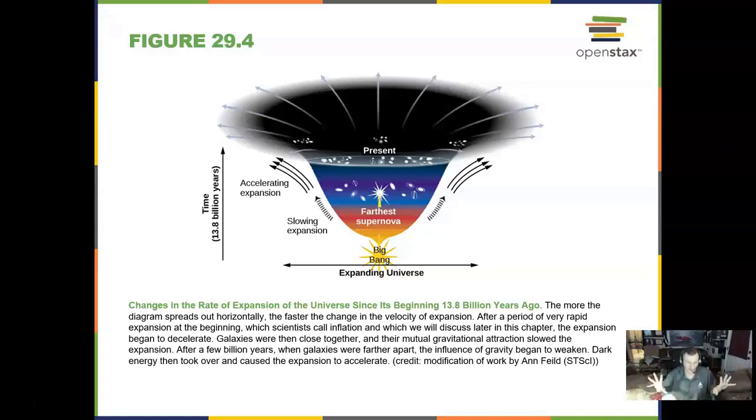The further back in time you look, let's say we look 13 billion light years away, those galaxies are moving away from us with a large galactic redshift, sometimes 40 to 50% the speed of light. Whereas things near us don't go near that far.